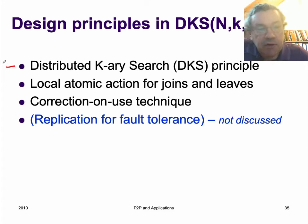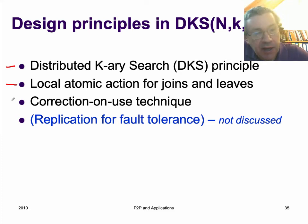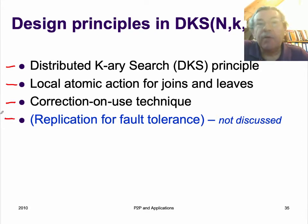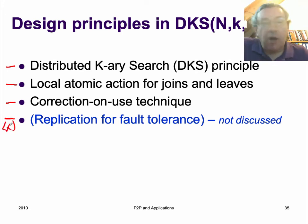DKS uses distributed care research. It adds local atomic actions for joins and leaves so that it can support concurrent joins and leaves. It adds correction on use for fixing the routing tables when nodes join, leave, or fail. It also has replication for fault tolerance, where the data items are stored in multiple copies on the system.